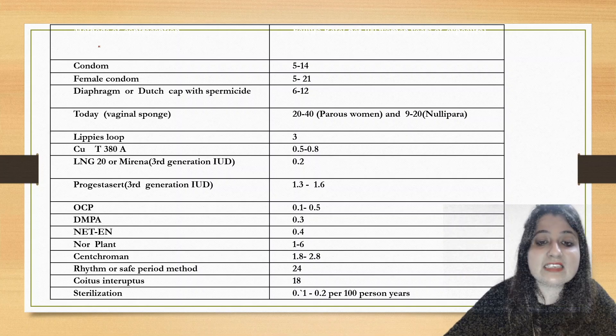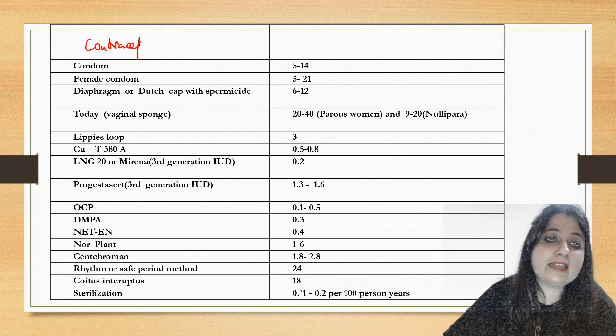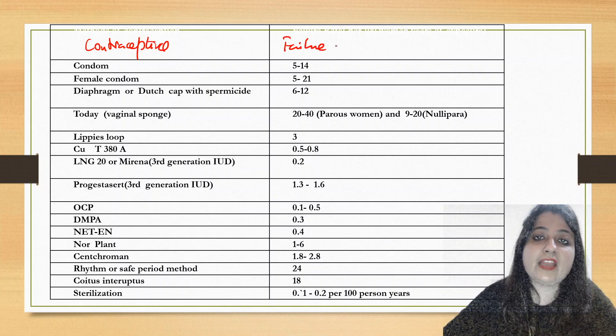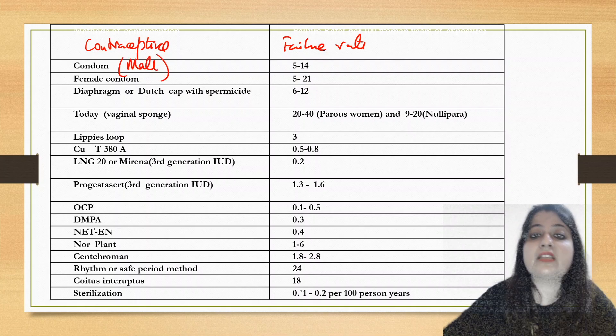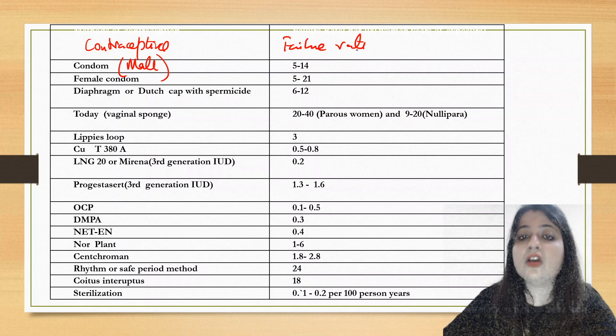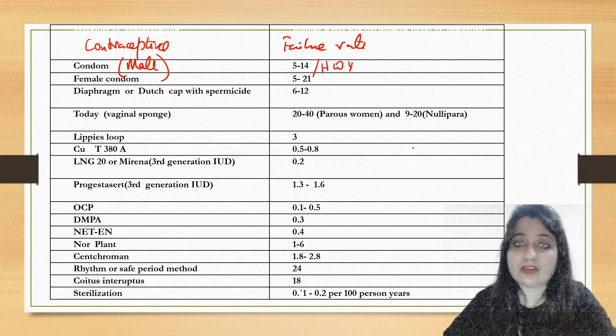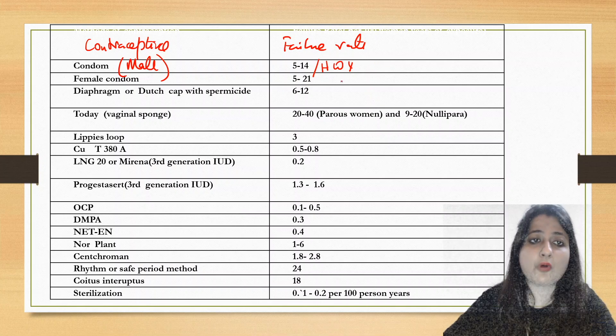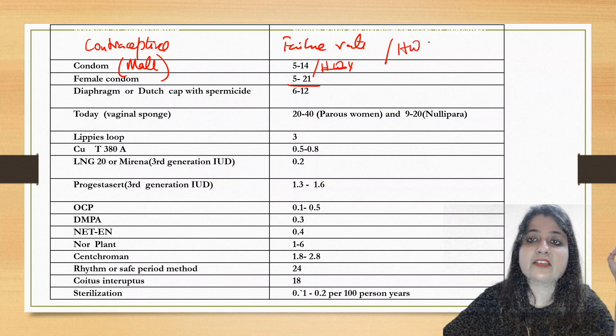Now this is the compiled list of the contraceptives and the failure rate. This is very very important topic. Take care: contraceptives and their failure rate. So first we have the condoms - just male condoms - 5 to 14 per 100 woman years. You must remember this is per 100 woman years everywhere.